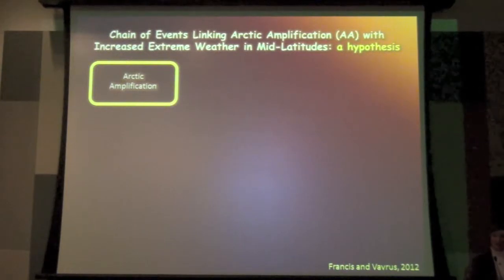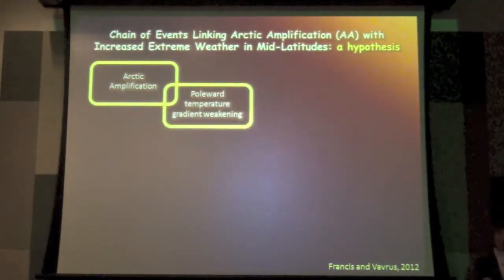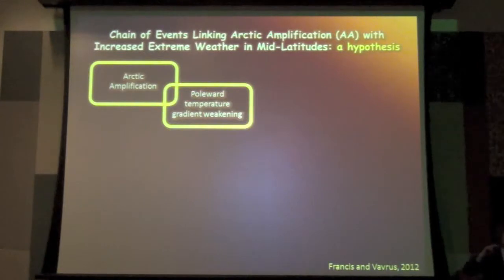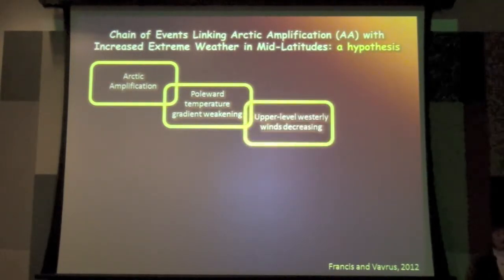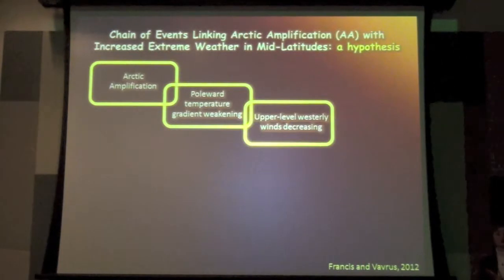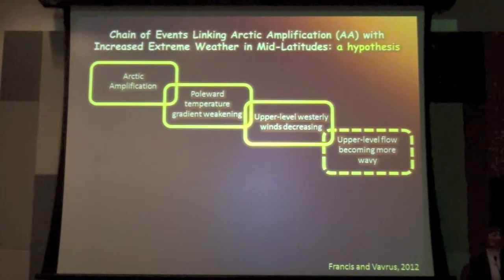We start with the Arctic amplification. We know this causes that hill to get less steep. In other words, we call it a weakening of the poleward temperature gradient. So the gradient in the temperature is getting smaller. And that we know is leading to a weakening of the upper level winds. These first three links in the chain are pretty solid, and that's why they're colored solid. But the next link in the chain is a little more tenuous. This is where we're really focusing our research on now. And this is where some of the controversy that David mentioned in the beginning is happening.